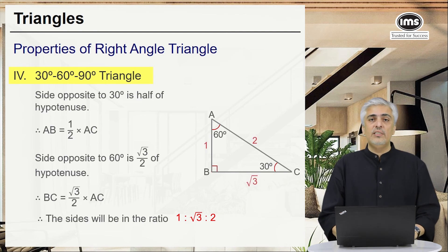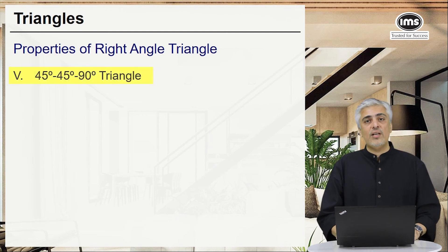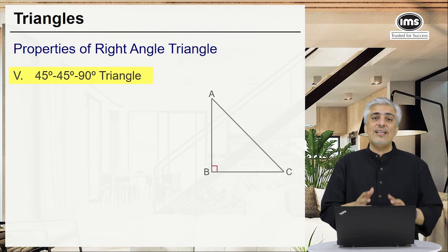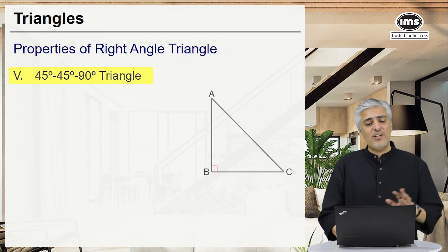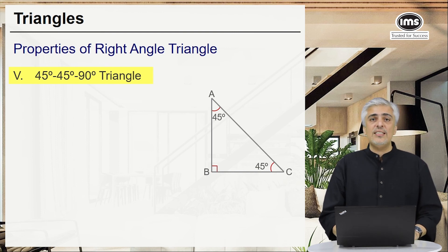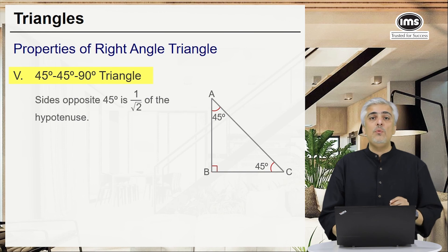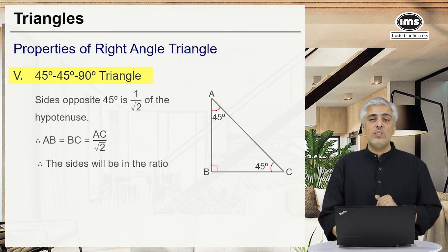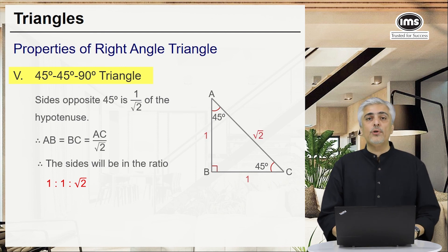The next would be the 45-45-90 triangle. Obviously if I call it as a 45-45-90 triangle, I know it has to be an isosceles right angle triangle. So whenever a triangle is an isosceles right angle, it will always be 45-45-90. So one angle is 90 and the other two angles are 45. The property over here is the side opposite to 45 will be 1 upon root 2 of the hypotenuse. So AB and BC which are both equal to each other will be 1 upon root 2 of AC. Or the three sides will be in the ratio 1, 1, and root 2 where AB and BC can be 1 and the hypotenuse would be root 2.